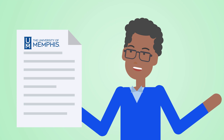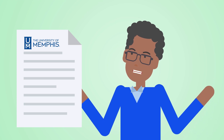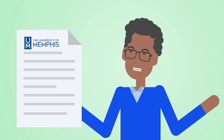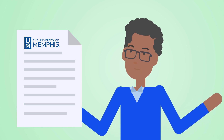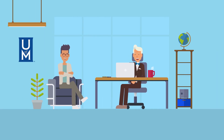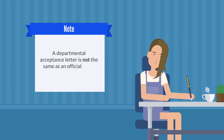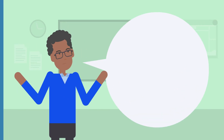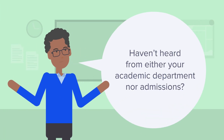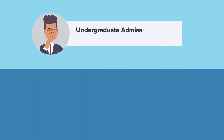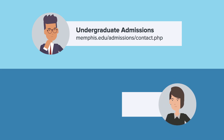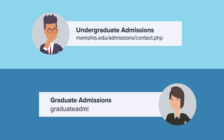What to do if you did not receive an official acceptance letter? For many masters and PhD programs, the department will notify applicants of their acceptance before the official acceptance has been finalized. In these cases, students should ask their academic department when they can expect their official acceptance letter. Note, a departmental acceptance letter is not the same as an official U of M acceptance letter. If you haven't heard from either your academic department nor admissions: for undergraduate, visit memphis.edu/admissions/contact.php; for graduate students, email graduateadmissions@memphis.edu.